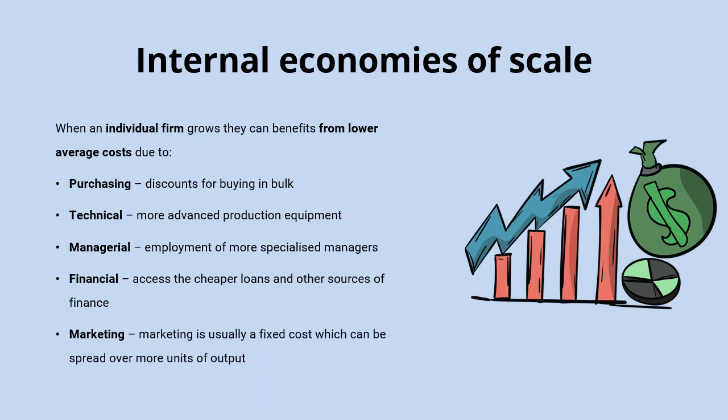There are many other internal economies of scale. One more is marketing economies of scale, which occurs because marketing is a fixed cost — the more units of output you produce, the more you spread that fixed cost over a greater number of units. For example, if you run a burger shop and put out a television advert, the cost of that advert is fixed whether you're selling 100 or 1,000 burgers a day. But the cost per burger — your average cost — is going to be lower per unit when producing on a higher scale of output.